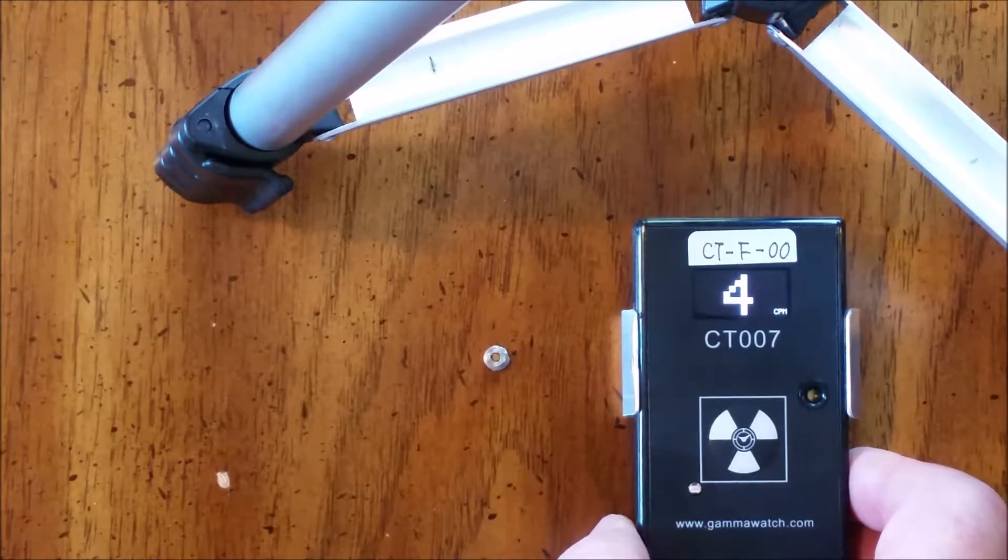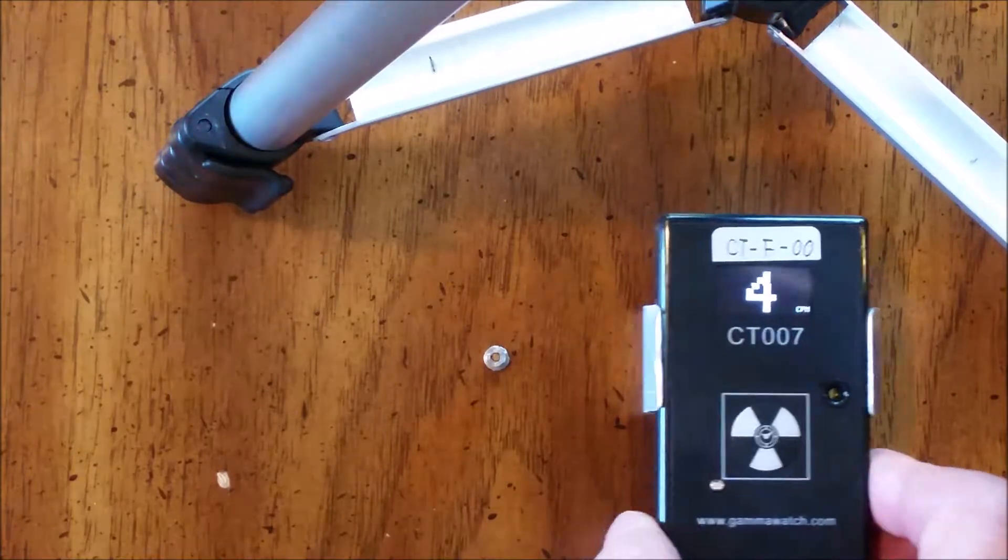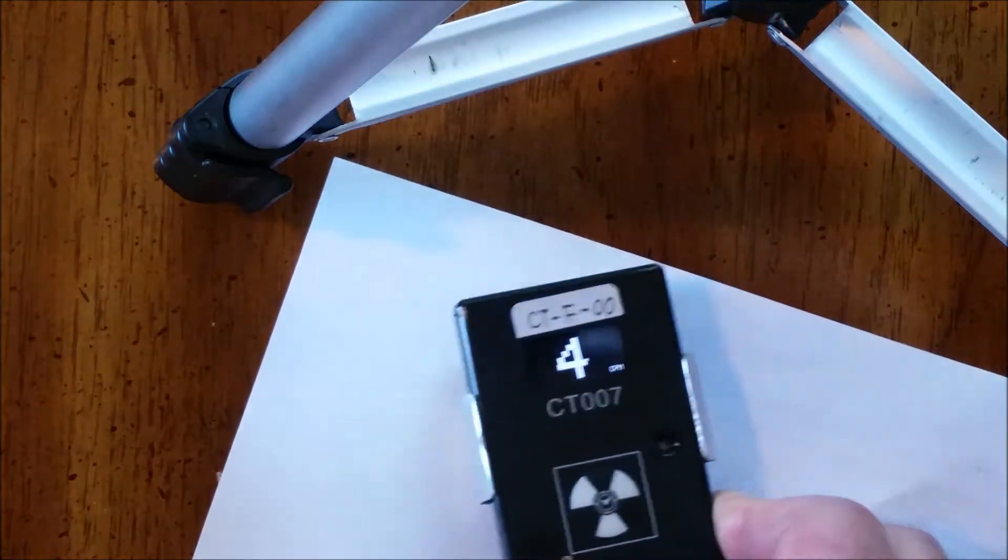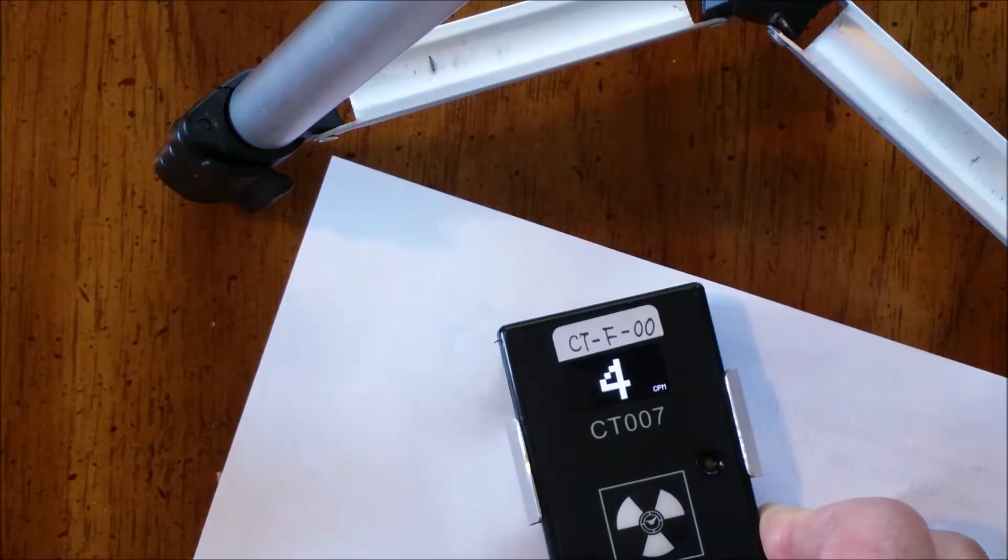And the way that we can tell that it's an alpha source is that it just takes a sheet of paper to completely stop the alphas.